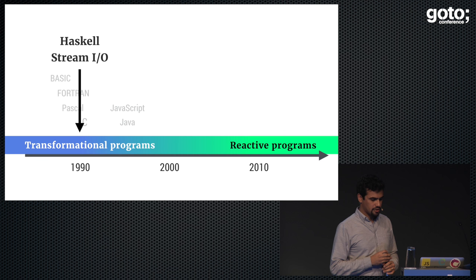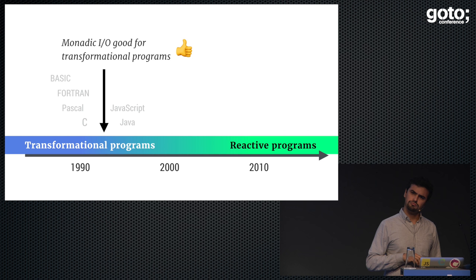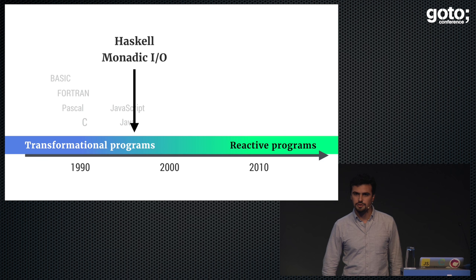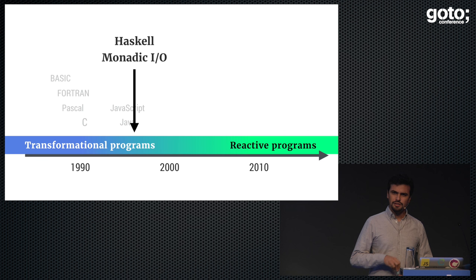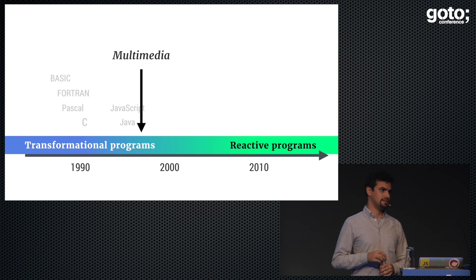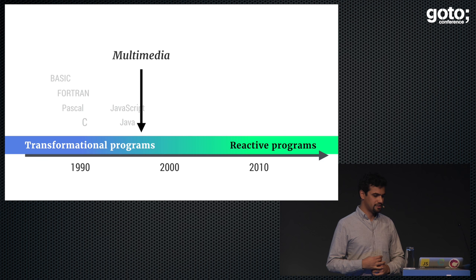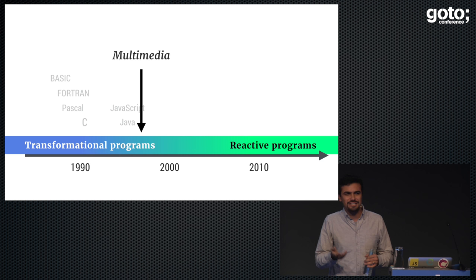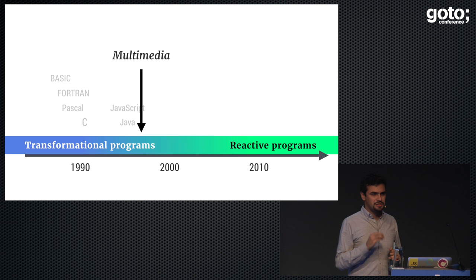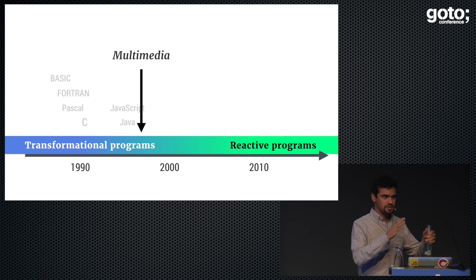It was also hard to extend the types of IO actions. So they figured out that Monadic IO is quite good for transformational programs, and from 1996 onwards they started using Monadic IO for almost everything in Haskell. Stream IO was left dead. Around that time — 1996 — we started talking about multimedia, just like today we have Internet of Things. Multimedia was basically UIs: Windows 95 and things like that. UIs are reactive programs. So we were still a dominantly transformational world, but we started having a bit of green.